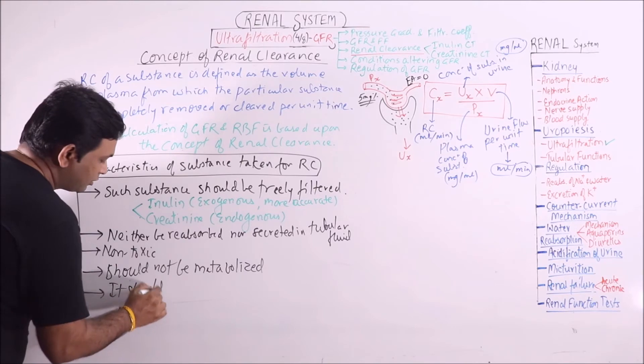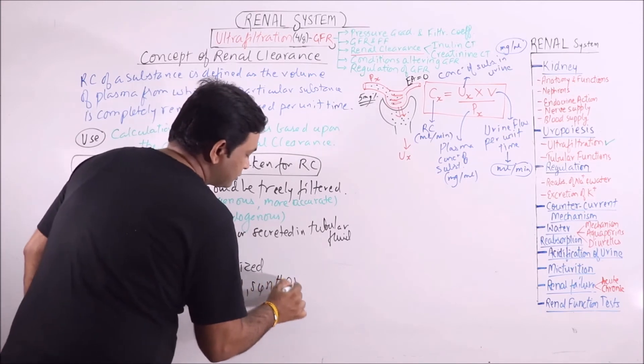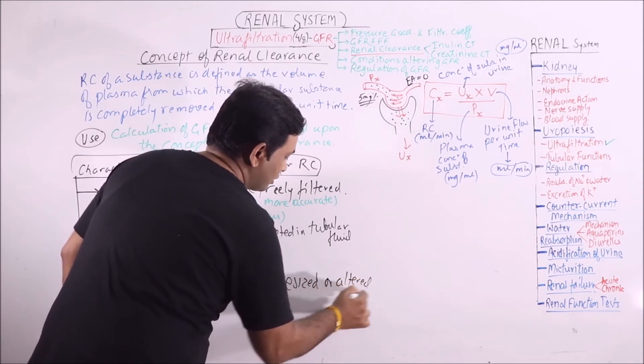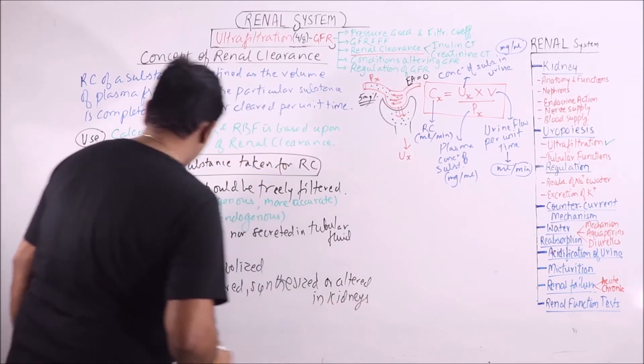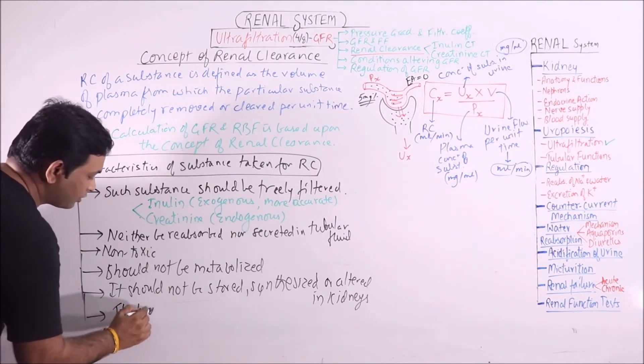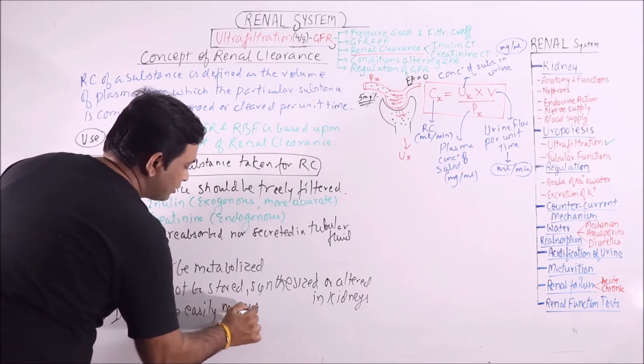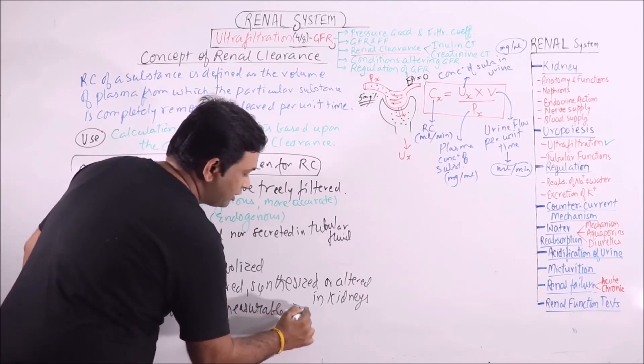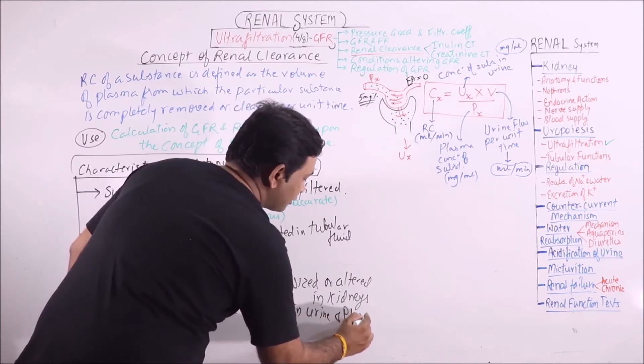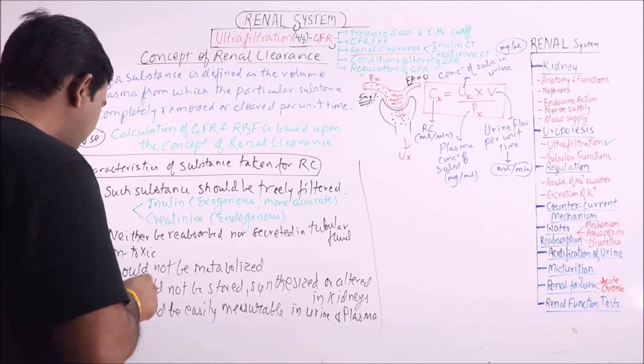It should not be metabolized in any way. It should not be stored, synthesized, or excreted in kidneys and it should be easily measurable in urine and plasma. These are the important characteristics of the substance which is taken for renal clearance.